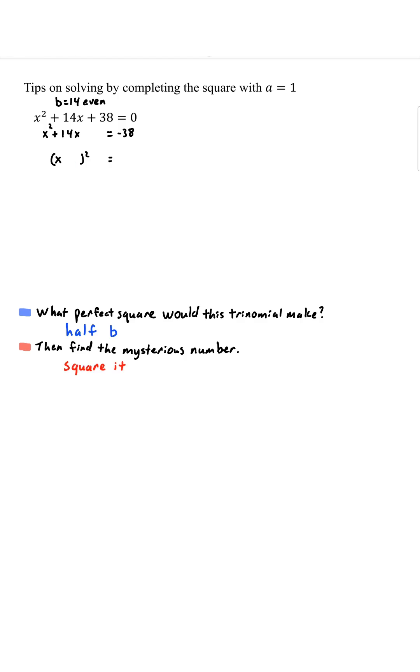So what do I mean? Here's x squared plus 14x equals negative 38. We're going to take half of b. So half of positive 14 is positive 7. And then we'll square it. 7 squared is 49. Make sure you add it to both sides.